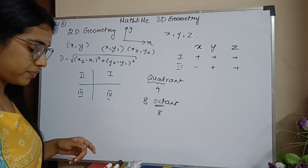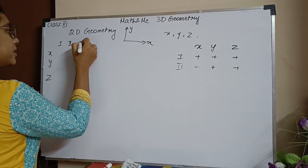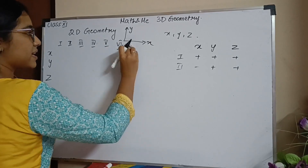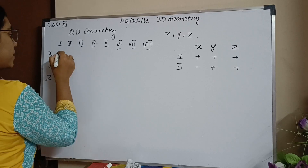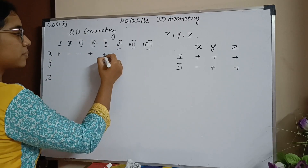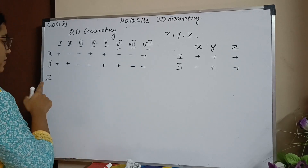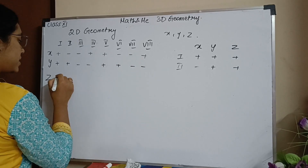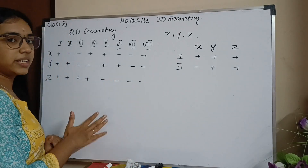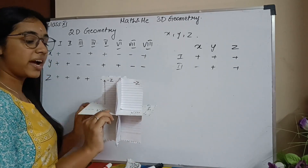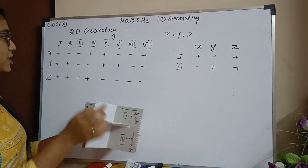Let me draw the table. I have x, y, and z across eight octants — first through eighth. To remember the pattern: for x, it goes +, −, −, + and then repeats: +, −, −, +. For y, it goes +, +, −, − and repeats: +, +, −, −. For z, the first four octants are all positive and the next four are all negative: +, +, +, +, −, −, −, −. This tabular column is very helpful for solving questions.